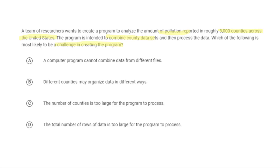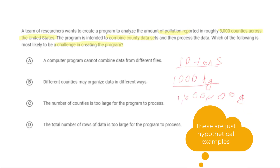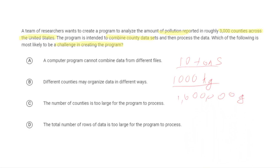For example, talking about pollution data, maybe in one county something is measured in tons of pollution, whereas in another county it might be in kilograms. Be wary of answers that mark difficulties in computing — you can always combine data in different files. The number of counties being too large, or too many rows of data, are not valid concerns because we can always parallelize data processing to make it more efficient. The only correct answer is that the counties may organize data in different ways.